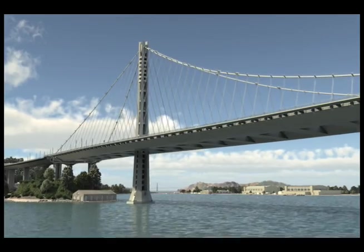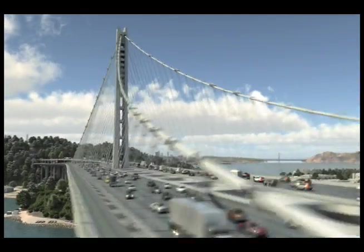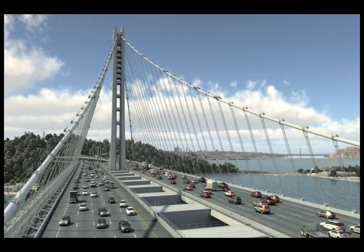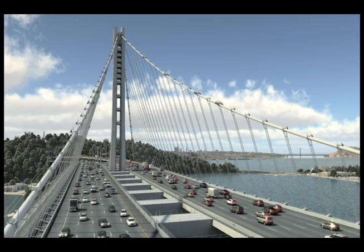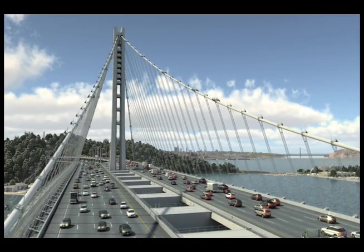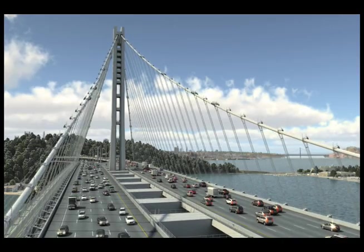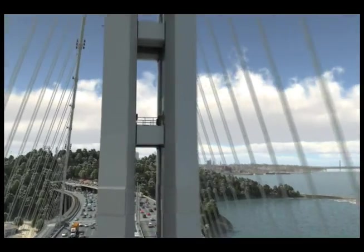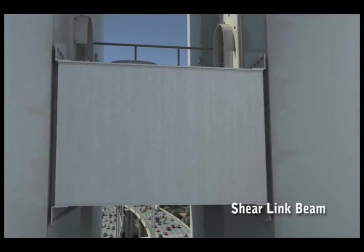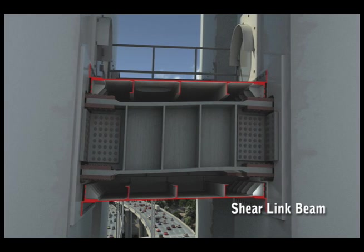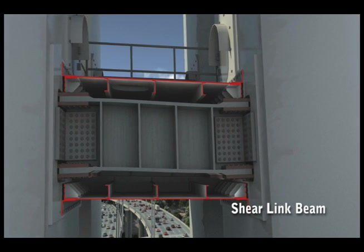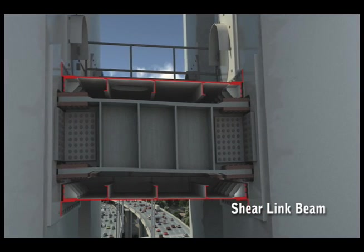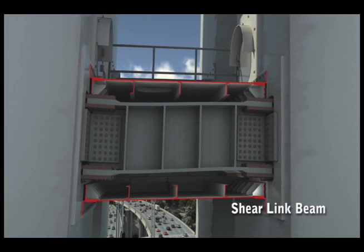As we move in on the self-anchored suspension bridge, we look at one of our first innovations: the shear link beam. What a shear link beam does is it allows the four legs of our main tower for the self-anchored suspension bridge to move independently during an earthquake. It takes the energy from that earthquake. Here you can see a simulation of that movement — all four legs of the bridge are moving independently and not being damaged, while the shear link beam bends and contorts, taking that energy.